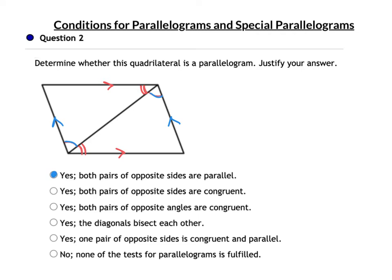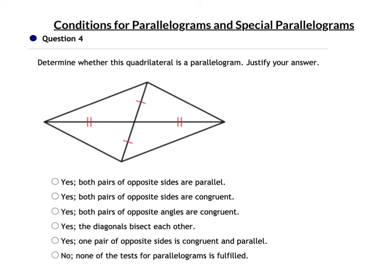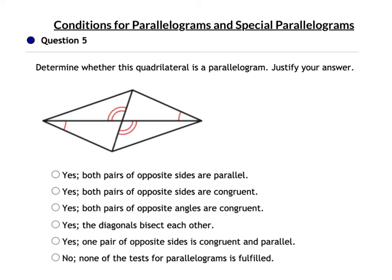In another figure, the angle marks show alternate interior angles on one pair of sides making them parallel, and the other pair of angle marks makes the other pair of sides parallel — so by definition, both pairs of opposite sides are parallel and it's a parallelogram. In question 4, the diagonals bisect each other, so it's a parallelogram. In question 5, one set of angles are alternate interior angles and the other pair are vertical angles — already known to be congruent — so all we have is one set of parallel sides, meaning it's not a parallelogram.